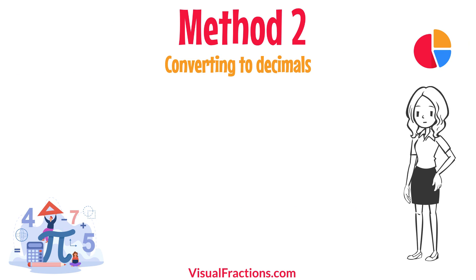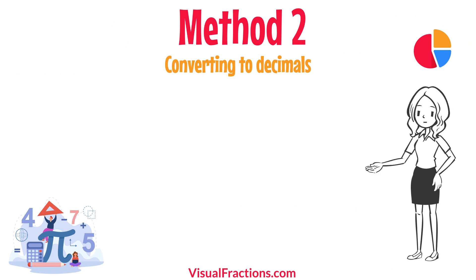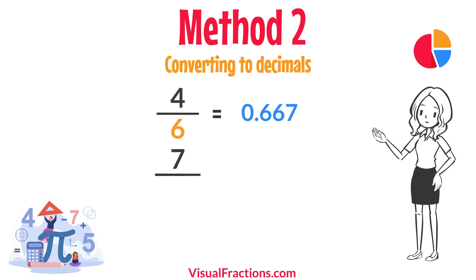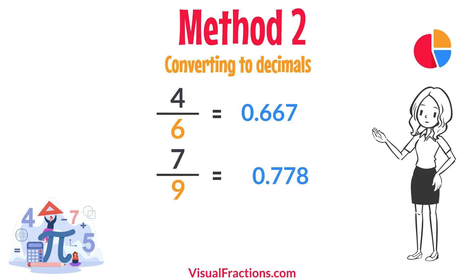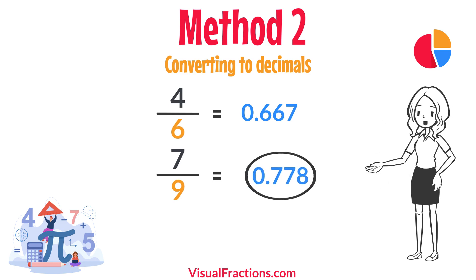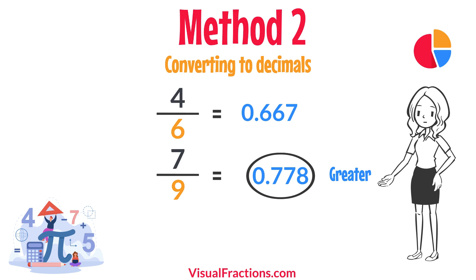For a second method, let's convert each fraction to a decimal. Using a calculator, divide 4 by 6 to get approximately 0.667, and divide 7 by 9 to get approximately 0.778. This calculation shows that 0.778 is greater than 0.667, confirming that 7 ninths is indeed greater than 4 sixths.